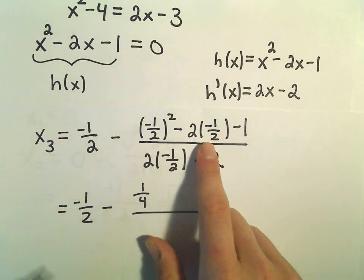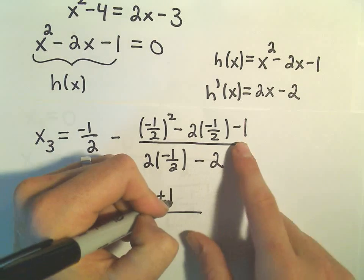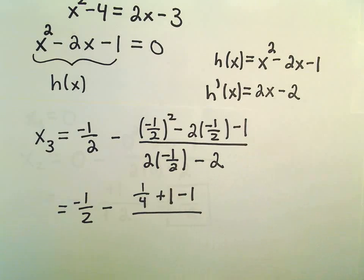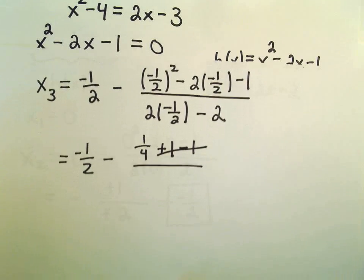We have negative 2 times negative 1 half, so that's going to be positive 1. But then we have this minus 1, so those all cancel out, so that's nice.